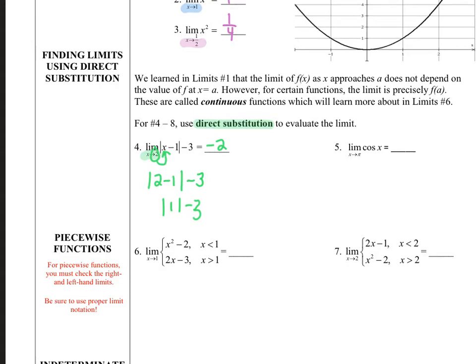On question number 5, I do the same thing. I'm just going to take the pi and I'm going to substitute that in. And this becomes cosine of pi, which is negative 1.